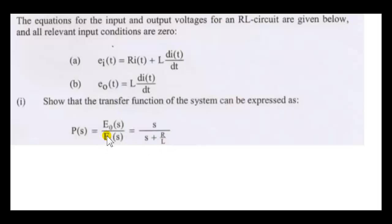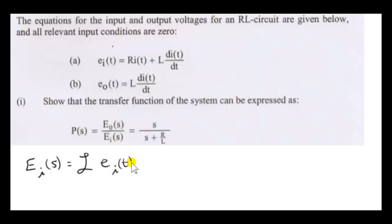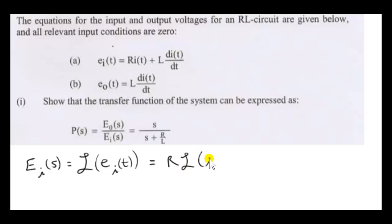Let's start by getting big E sub i of S. This is the Laplace transform of little e sub i of t — the input voltage as a function of time. We want the Laplace transform of this expression. R is a constant, so since the Laplace transform is a linear operator, we can take out R and multiply by the Laplace transform of little i of t.